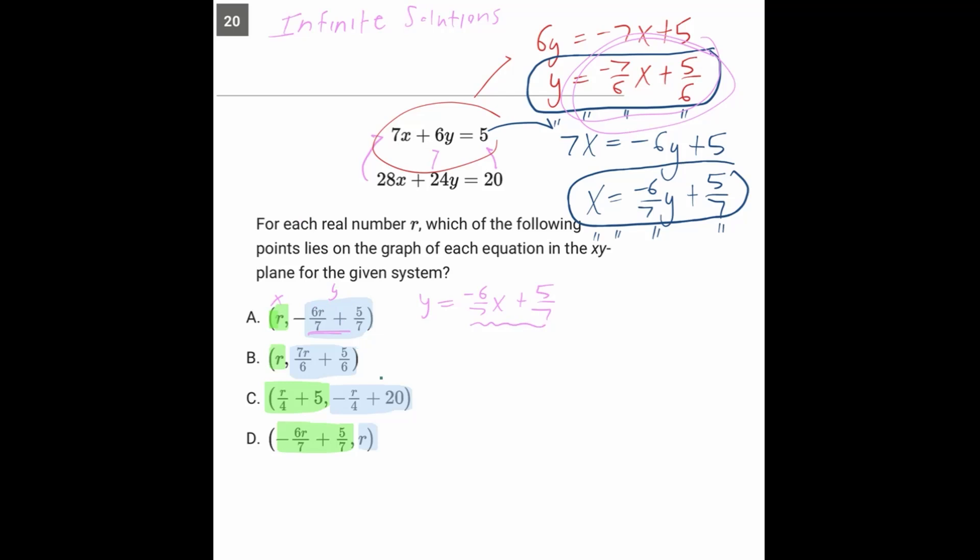So let's analyze B a little bit. B is saying that the x value is R and the y value is what you get when you multiply that R by 7 over 6. That's our x value, R. And then add 5 over 6 to that. And that's not what we had when we looked in the y equals format. We had y equals negative 7 over 6x. And this one says y equals positive 7 over 6x.